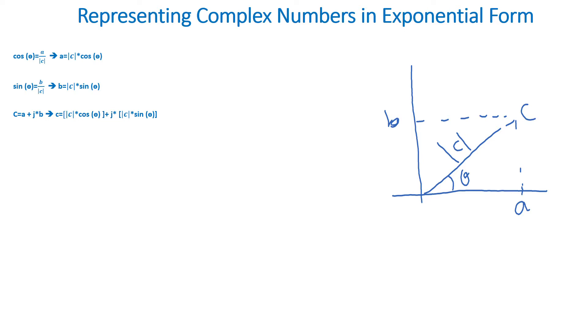As stated previously, C equals A plus J times B. Then we'll replace A and B with C times cosine theta and C times sine theta. If we factor out the magnitude of C, then we get C equals the magnitude of C times quantity cosine theta plus J times sine theta.